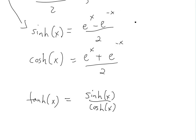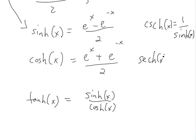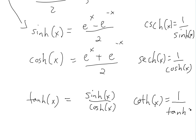You also have the other ones: cosecant h, which is just equal to 1 over sinh - very similar to the trigonometric functions. And then secant h of x, which is just equal to 1 over cosh of x. And then you have cotangent h of x, the hyperbolic form, which is just 1 over tanh of x.